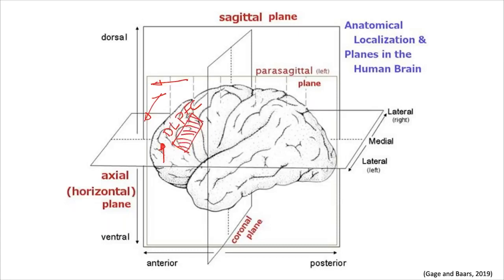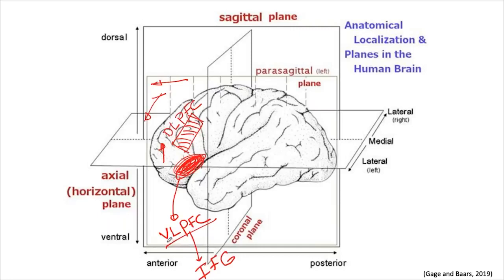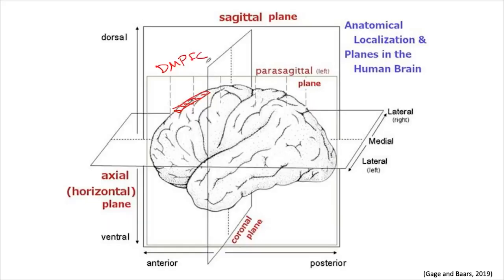When we talk about an area that is still lateral but on the lower part, we call it the ventrolateral prefrontal cortex — this is exactly the area also called the inferior frontal gyrus. And when we look at these areas in the brain in a three-dimensional way, the medial areas on the top are called the dorsomedial prefrontal cortex.